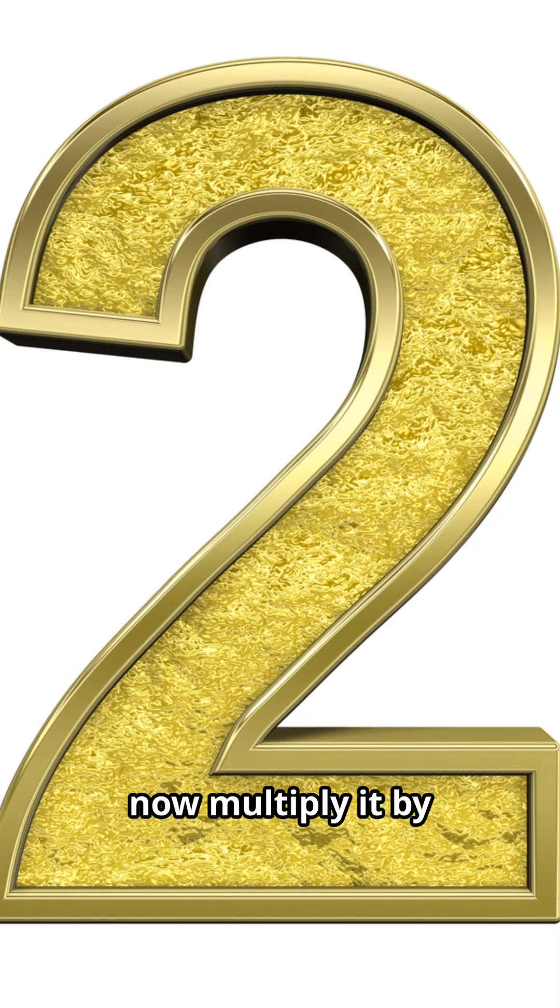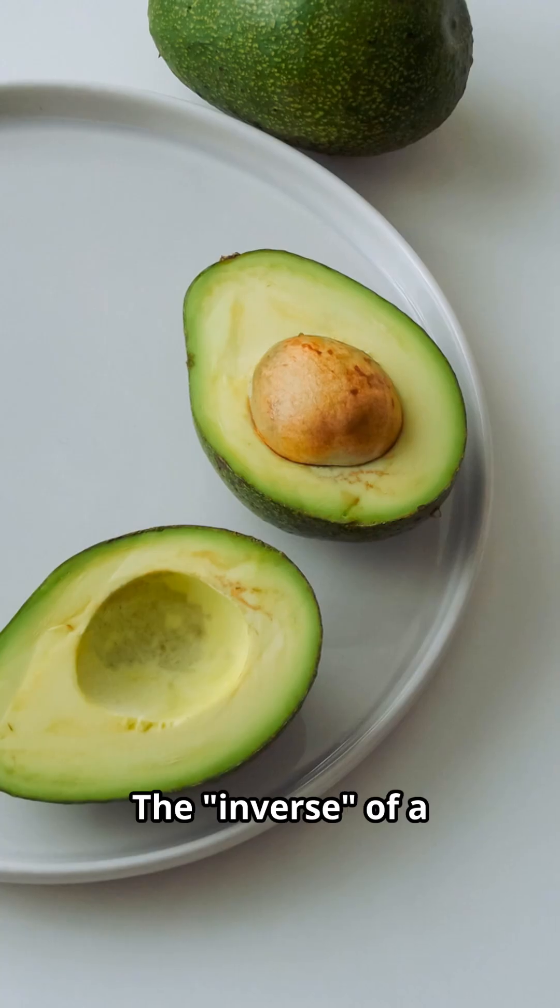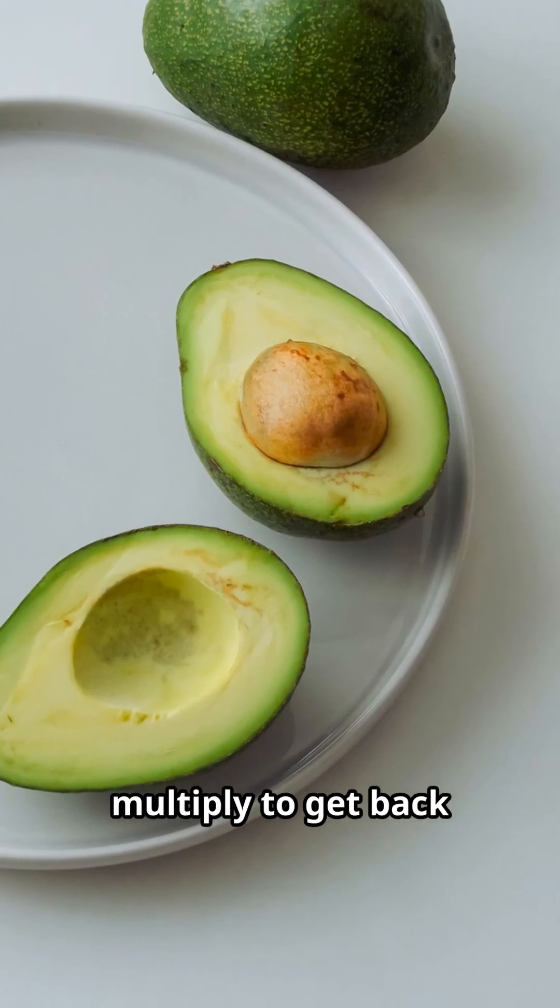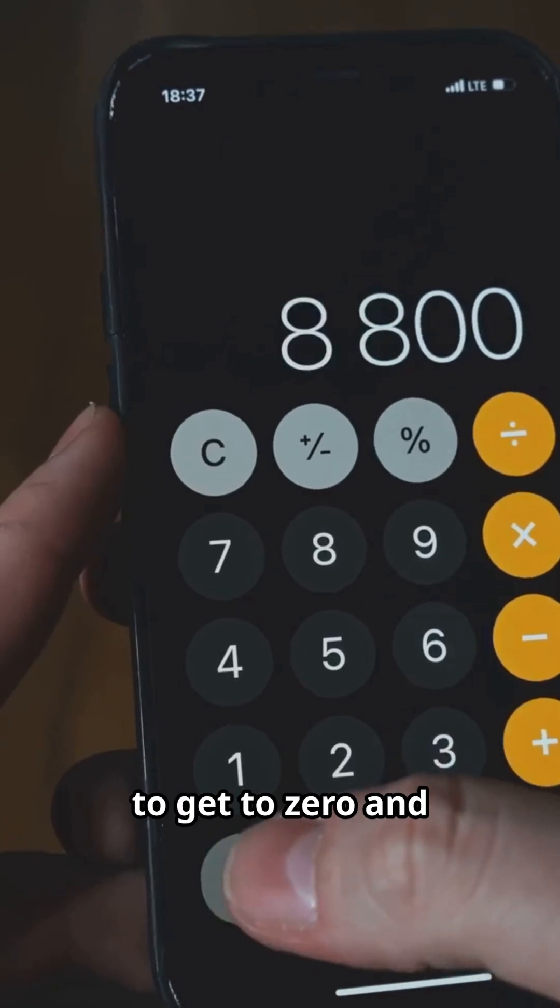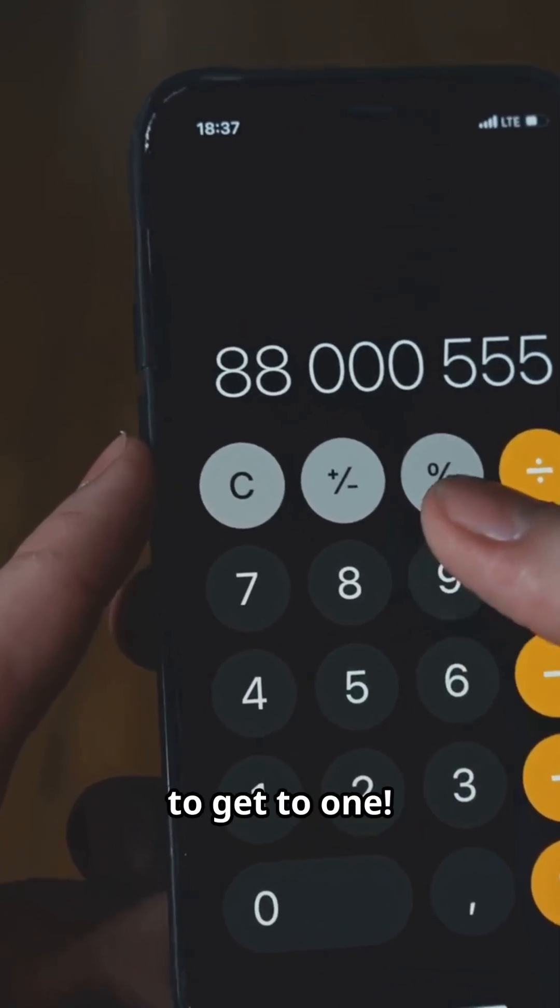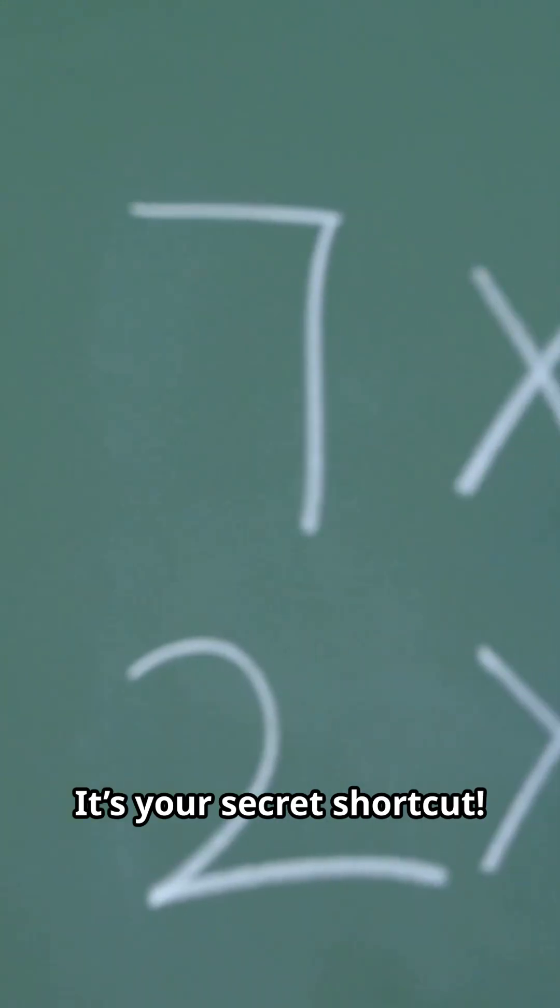Take 2 for instance. Now multiply it by 1 half. The inverse of a number is what you multiply to get back to 1. This property works for every number except 0. Remember, when it comes to the inverse property, it's what you add to get to 0 and what you multiply by to get to 1. It's your secret shortcut.